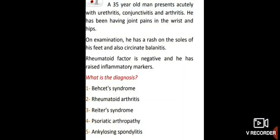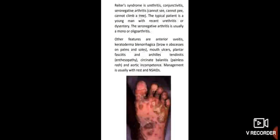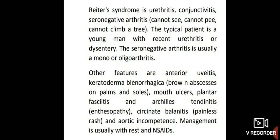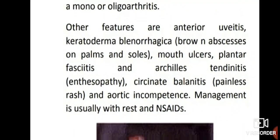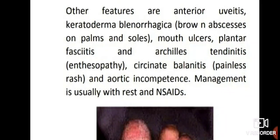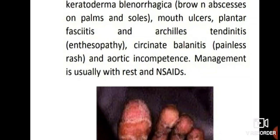A 35-year-old man presents acutely with urethritis, conjunctivitis and arthritis. He has joint pain in the wrist and hips. On examination he has a rash on the soles of his feet and circinate balanitis. Rheumatoid factor is negative and inflammatory markers are raised. The diagnosis is Reiter's syndrome — urethritis, conjunctivitis and seronegative arthritis: cannot see, cannot pee, cannot climb a tree. The typical patient is a young man with recent urethritis or dysentery. Other features include anterior uveitis, keratoderma blenorrhagica, brown papules on palms and soles, mouth ulcers, plantar fasciitis, Achilles tendinitis; management is usually by NSAIDs.